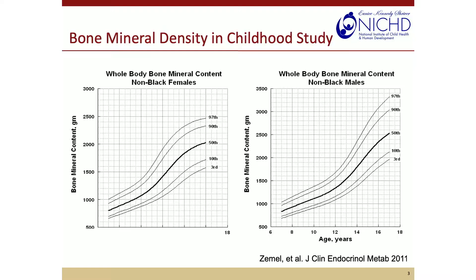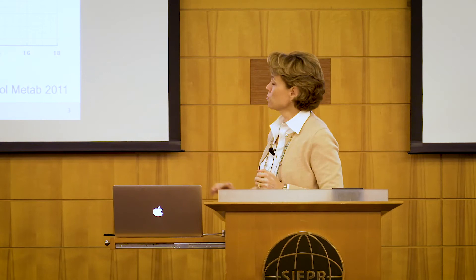We have separate charts for males and females, similar to growth charts, but also according to race because there are some real differences. I hope you can see between these two diagrams that the axes are different — the females goes up to 3,000 and the males goes up to 3,500. Males start out quite similar and end up with a significantly greater peak bone mass, as I showed on that last graph.